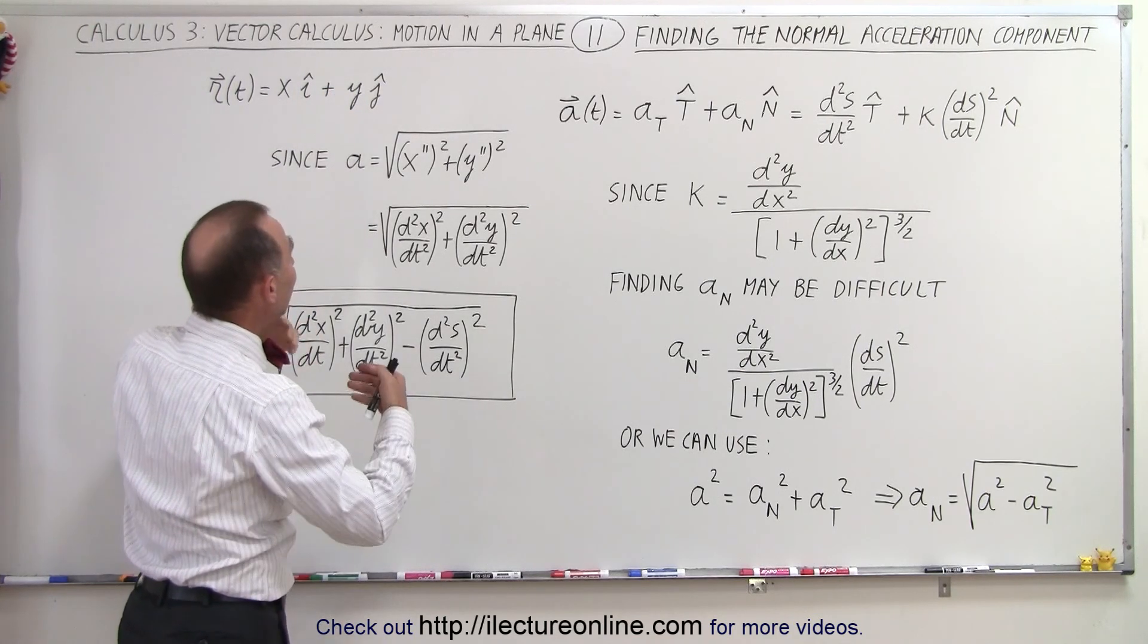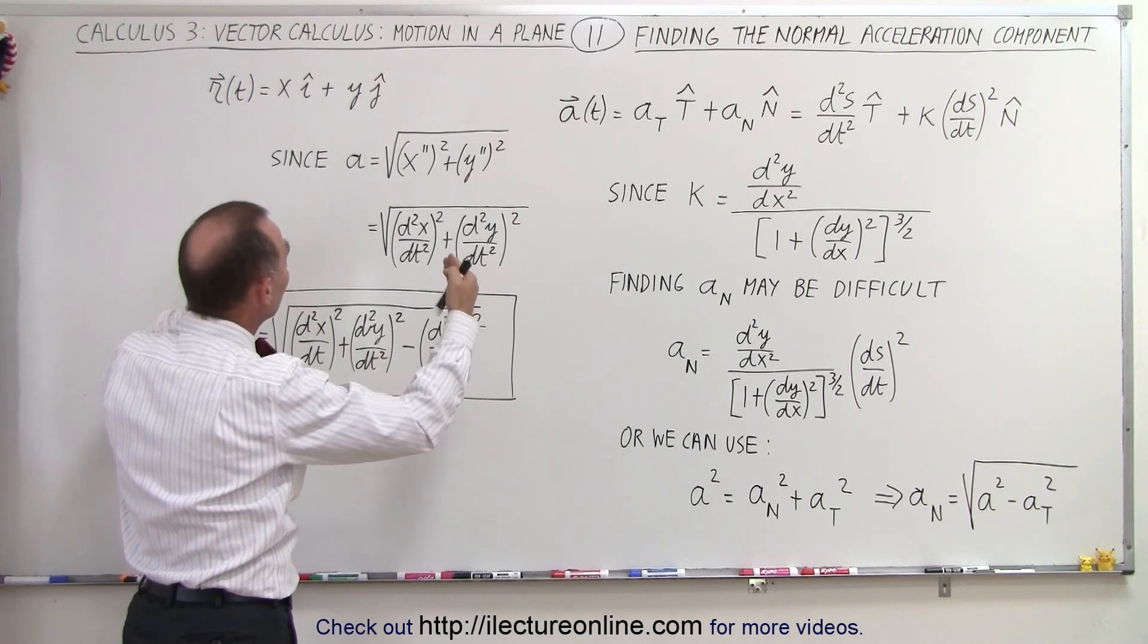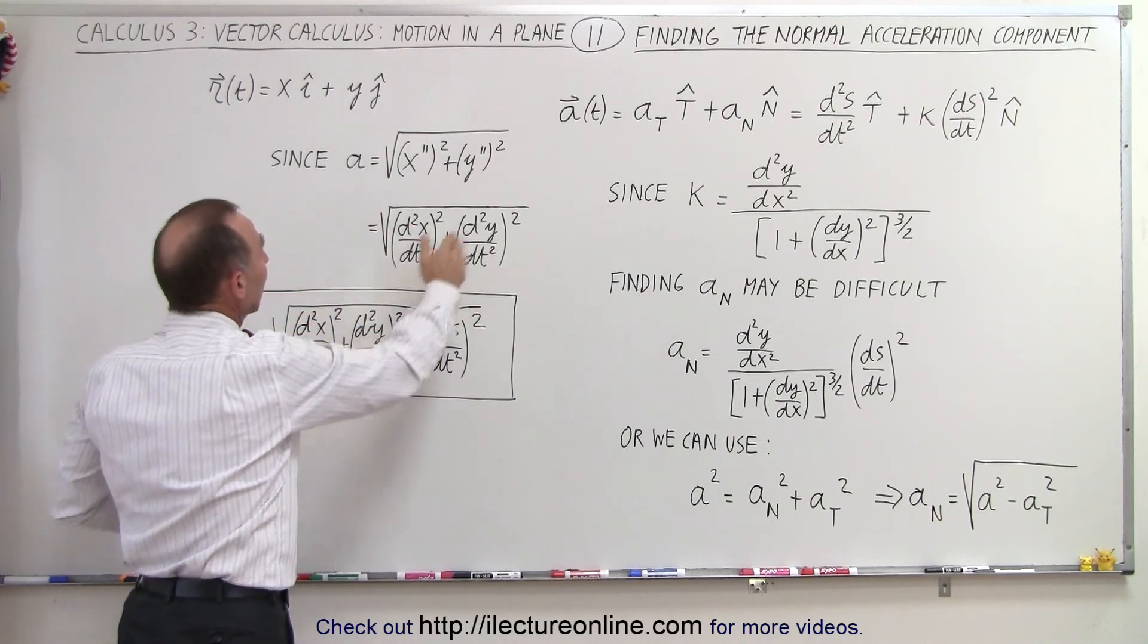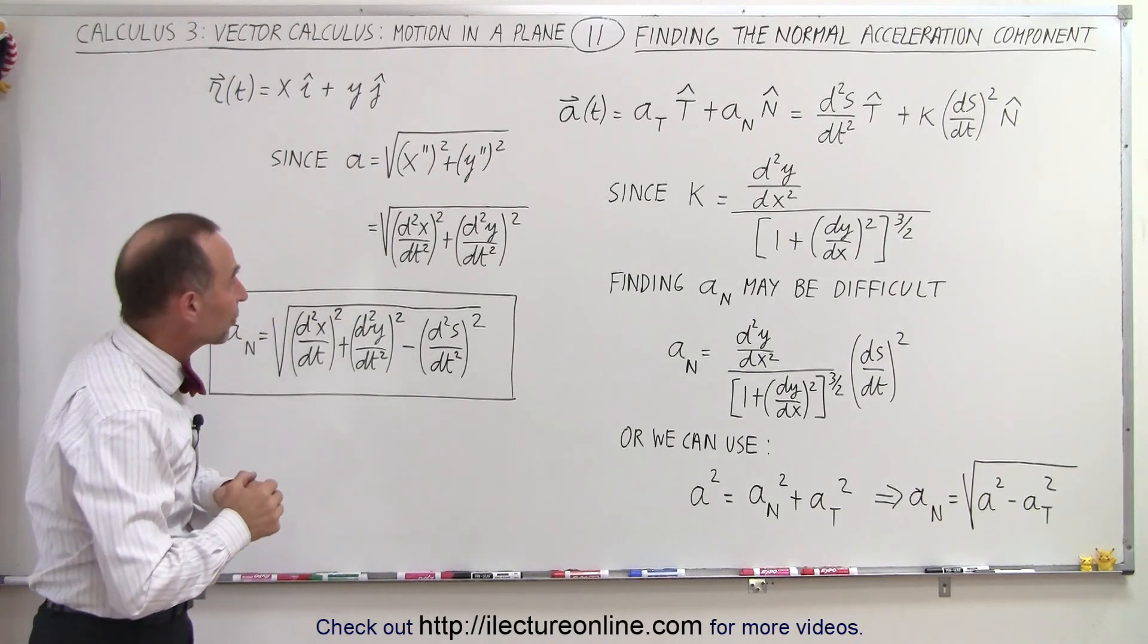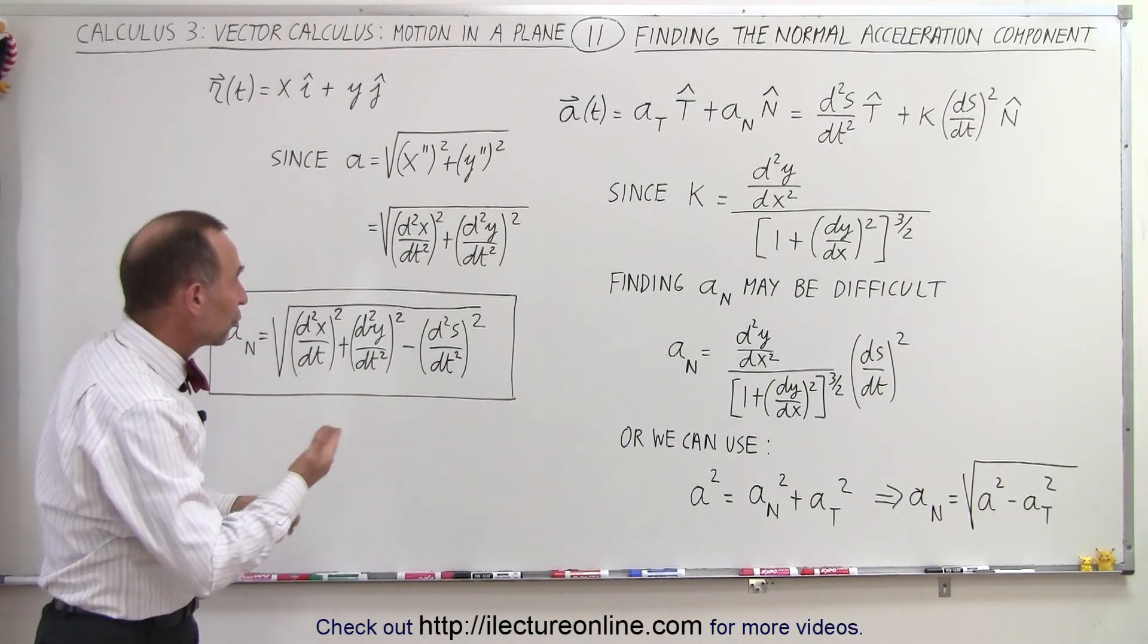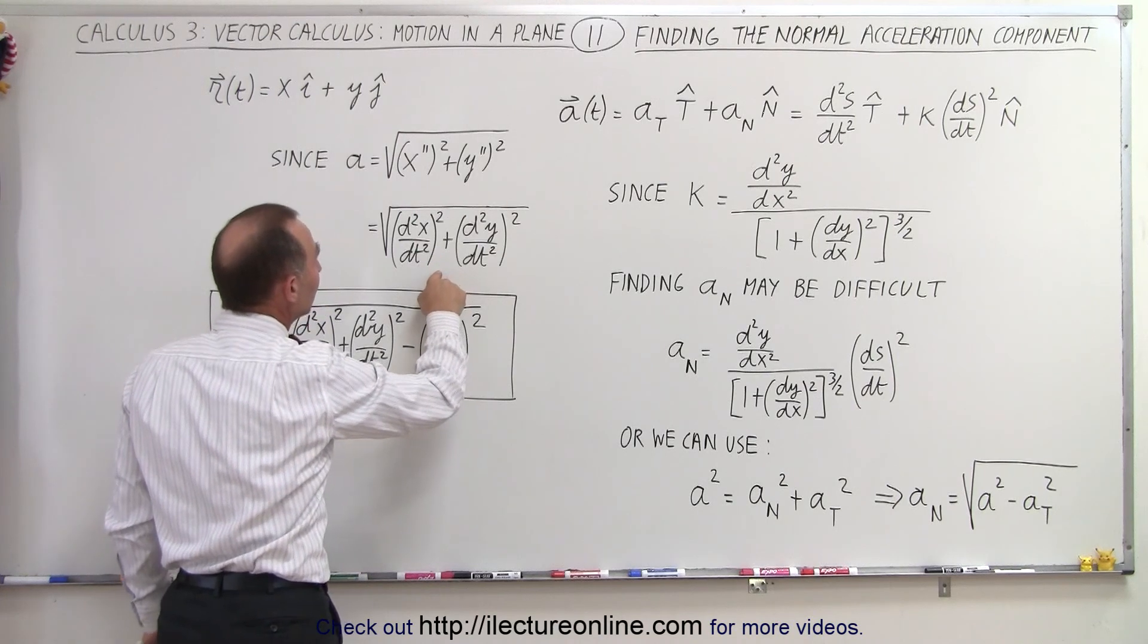And then we take the square of both components, add them together, take the square root, and that gives us the magnitude of the total acceleration vector. And of course that's expressed in terms of the x and the y components of the acceleration.